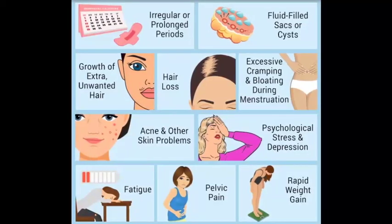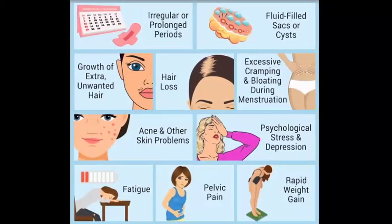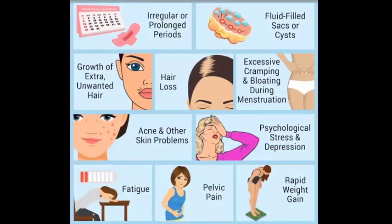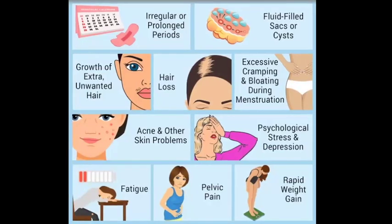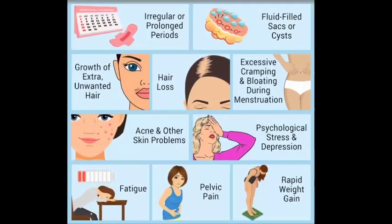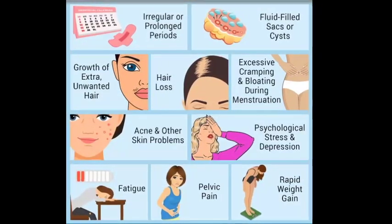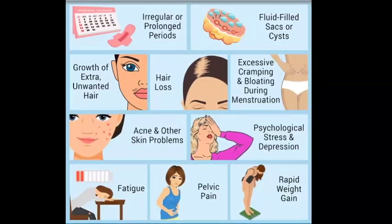Symptoms of PID include lower abdominal pain, dyspareunia, fever, back pain, and vomiting, as well as symptoms of lower genital tract infection, such as abnormal vaginal discharge or bleeding, itching, and odor.